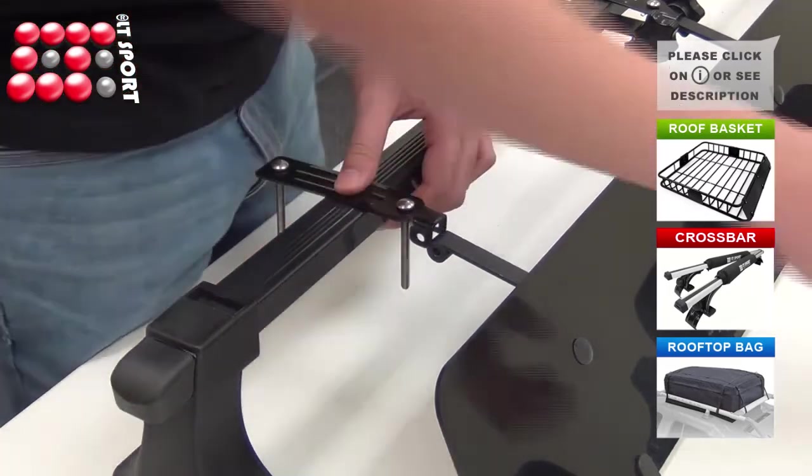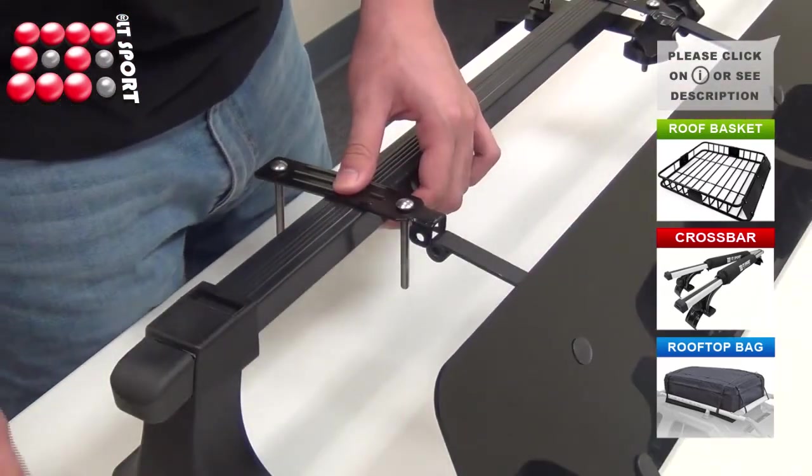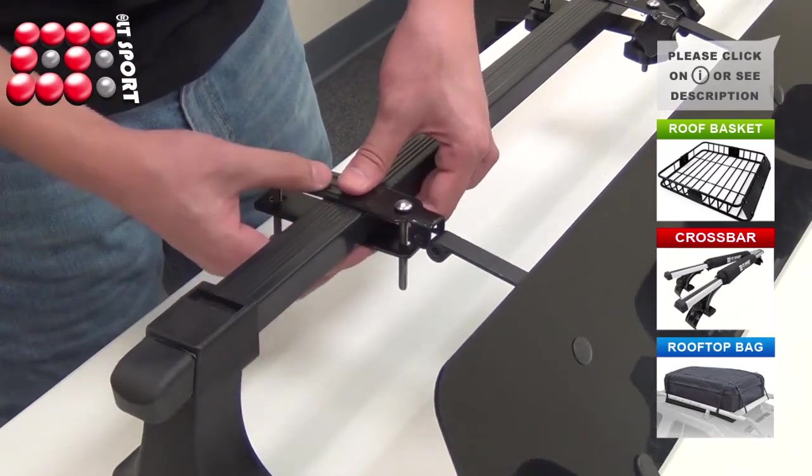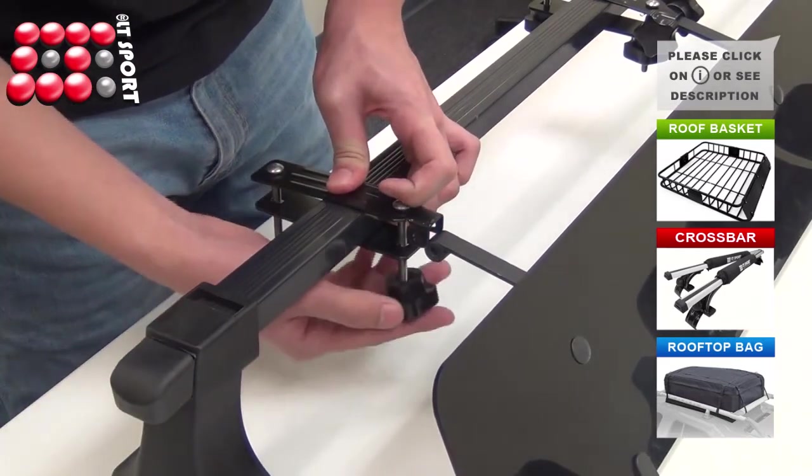Attach the bolts and plates onto the crossbar as shown. Use black knobs to tighten them.